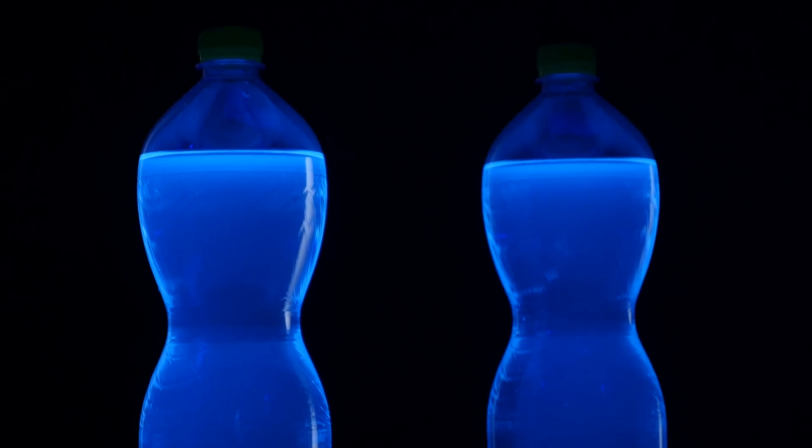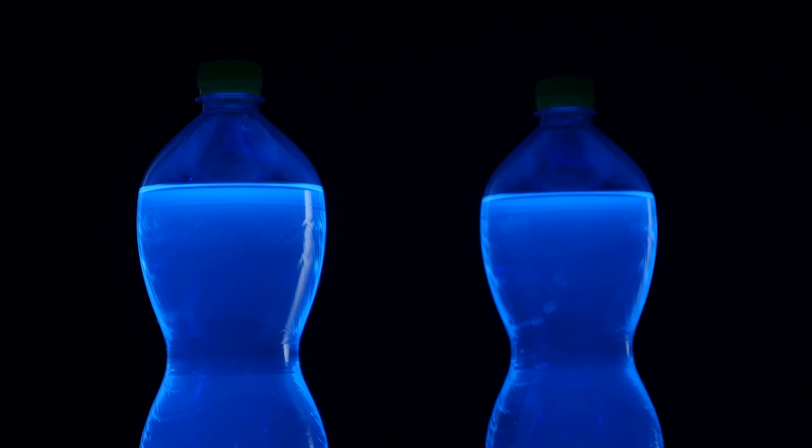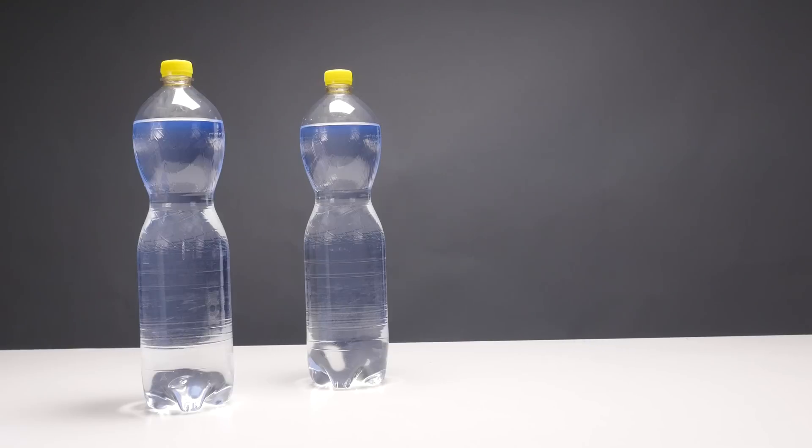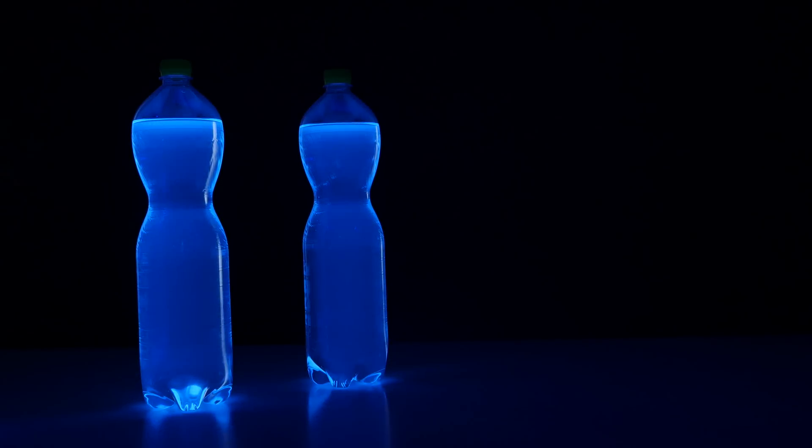First up, number 7. First we'll show you how to make glowing liquid. You'll need a bottle of tonic water and a black light lamp. You'll find a link to that in the video description. Well, that's all really. You won't need anything else.